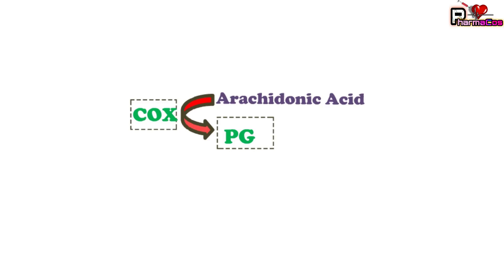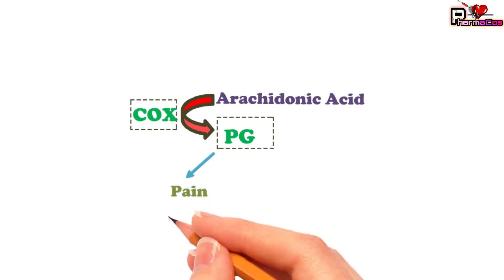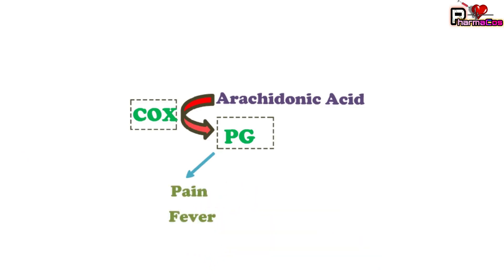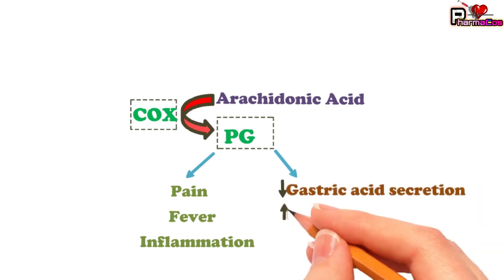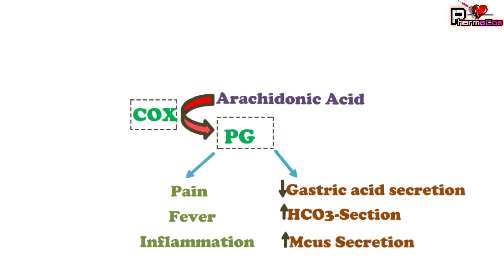During inflammatory conditions, prostaglandins are synthesized and have pathological roles: they can produce pain and nociception, increase fever and hyperthermia, and induce inflammation. At the same time, prostaglandins also have protective actions, particularly at the stomach — they decrease gastric acid secretion and increase bicarbonate and mucous secretion. There should always be a balance between acid secretion and bicarbonate or mucous secretion, and these protective actions are mediated by prostaglandin E1.